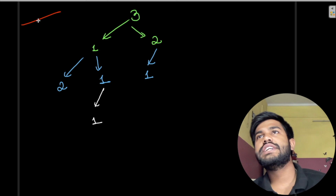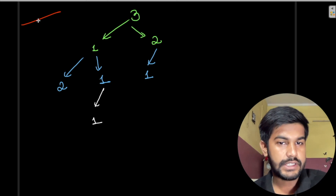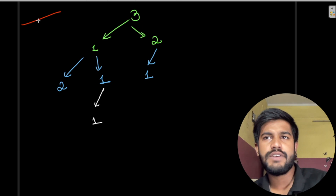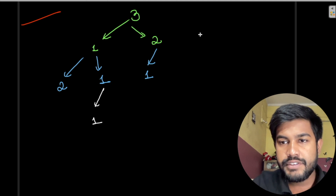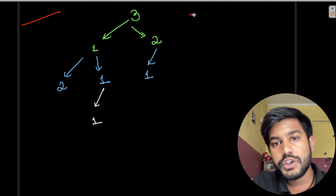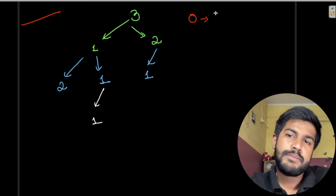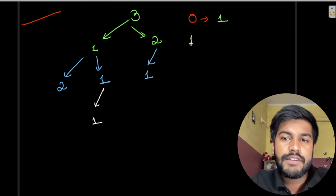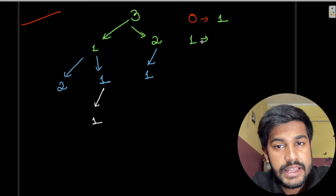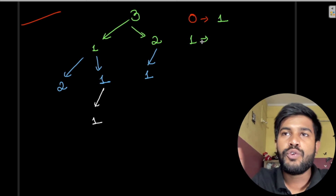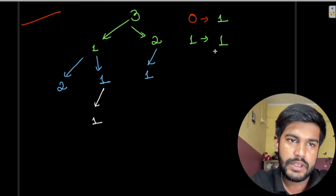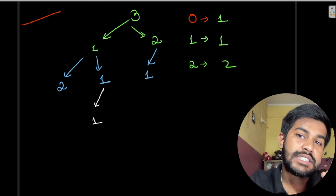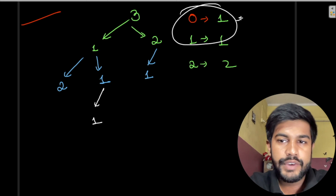So now we need to think about base cases and recursive cases. The base case would be the smallest valid case. When we are given the value 0, there is only one possible way — there is no way. If the value is 1, there is only one possible way, which is using just the 1-liter bottle. And if the value is 2, there are two ways: either 1+1 or simply 2. So the smallest valid test cases are N=1 returning 1 and N=2 returning 2.